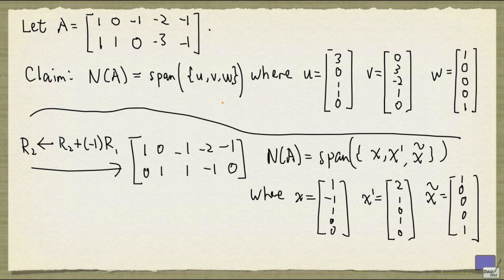Because the claim is that you can write every element of N(A) as a linear combination of u, v, and w. And x, x prime, and x tilde are elements of N(A). But if we can write x, x prime, and x tilde as linear combinations of u, v, and w,